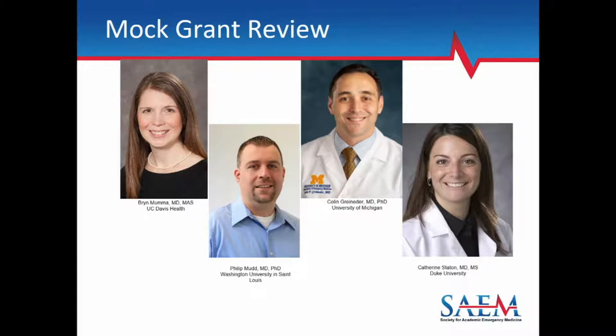The range of the three reviewers' scores will be the range for the rest of the group to score within. If anyone voting wants to go outside that range, please indicate so and state a brief reason. Everyone will enter their final score, and then we will move on to discuss any human subjects or budgetary concerns if they exist. Any questions about the process?